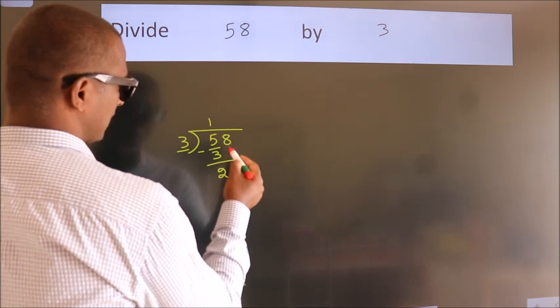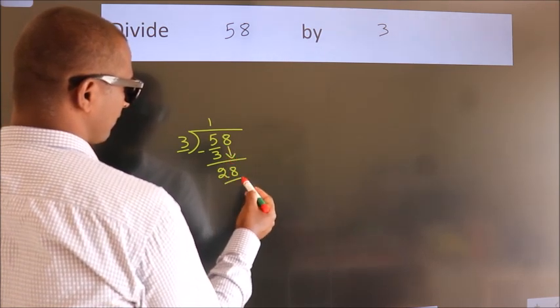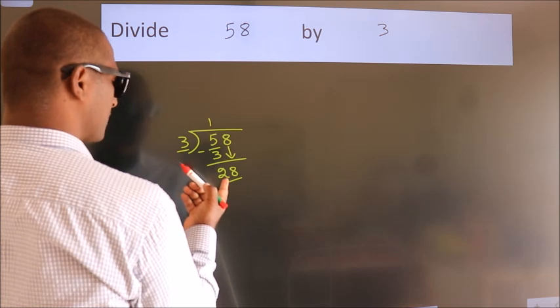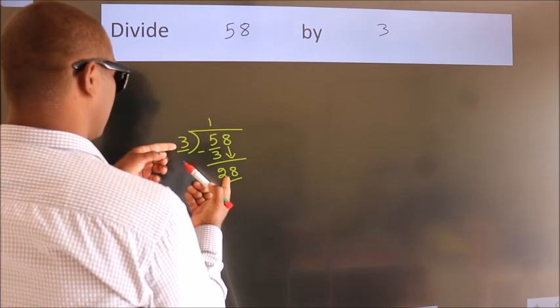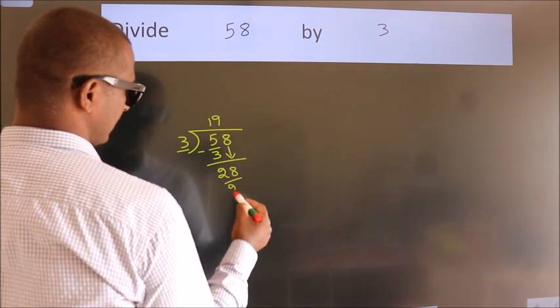After this, bring down the next number. So, 8 down. So, 28. A number close to 28 in the 3 table is 3 nines 27.